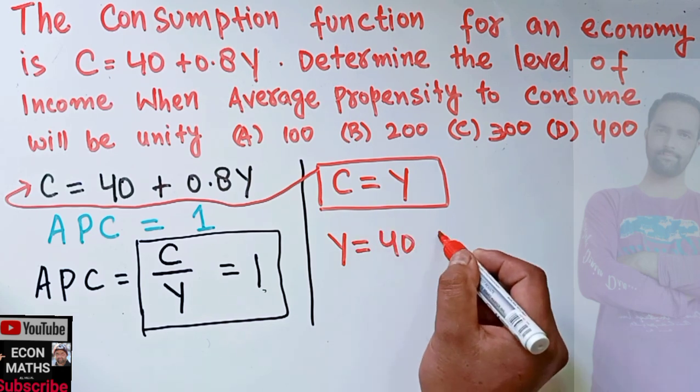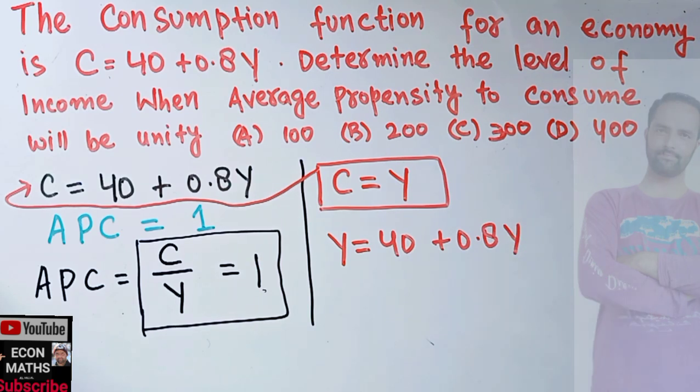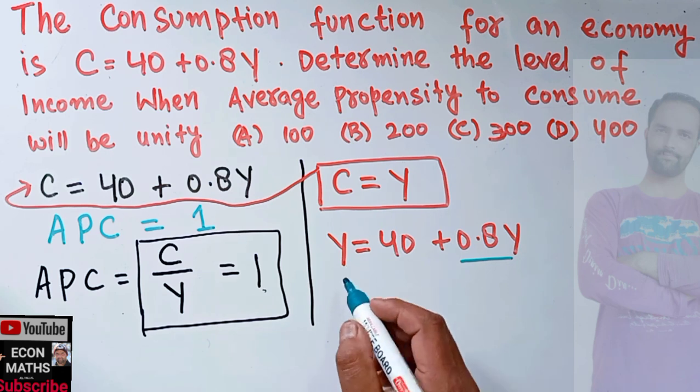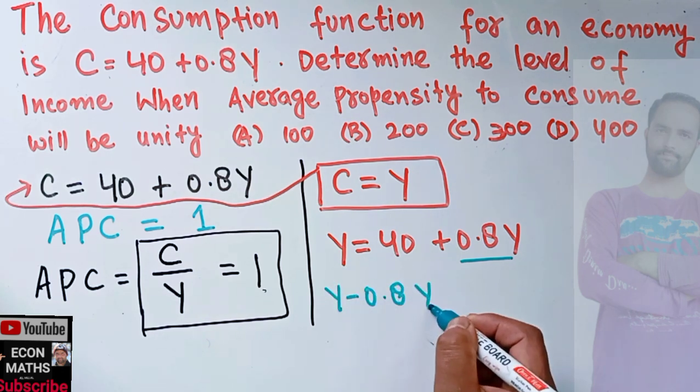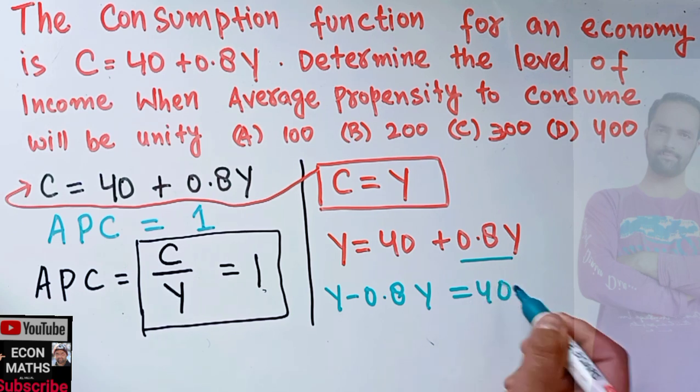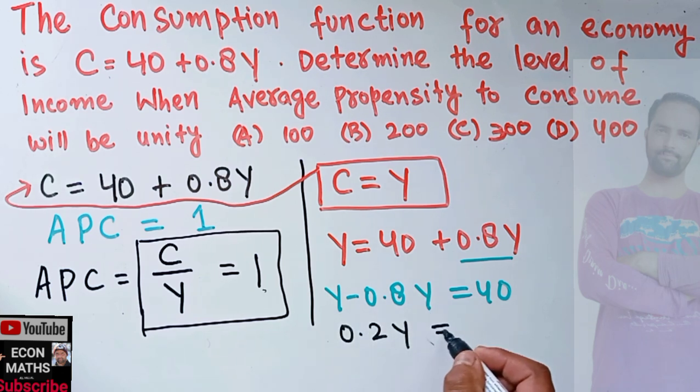Now transposing this 0.8Y to the left-hand side, so Y - 0.8Y = 40, which reduces to 0.2Y = 40.